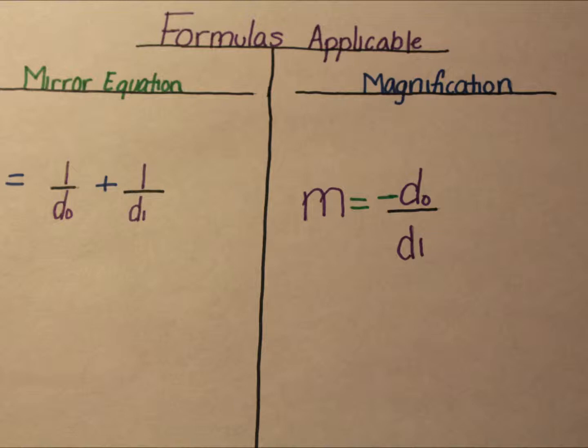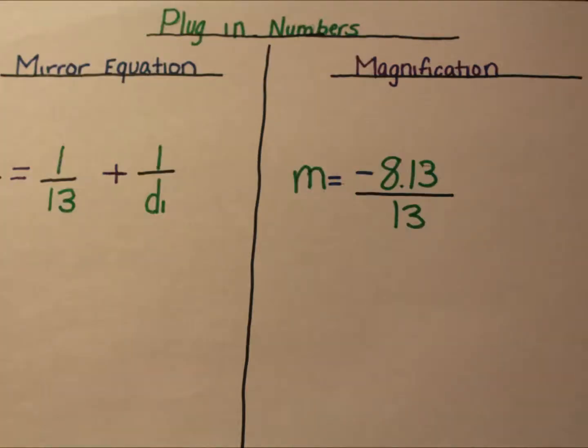When you plug in the variables, you get 1 over 13 plus 1 over the distance of the image, which equals 1 over 5. For the magnification, you get negative 8.13 over 13.